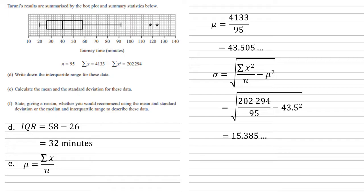We now need to state, giving a reason, whether you would recommend using the mean and standard deviation or the median and interquartile range to describe these data. The important thing to look at here is that we've got these two outliers on the right-hand side. These are two bits of data which are so far outside of the rest of the data that they haven't been included in the box plot.